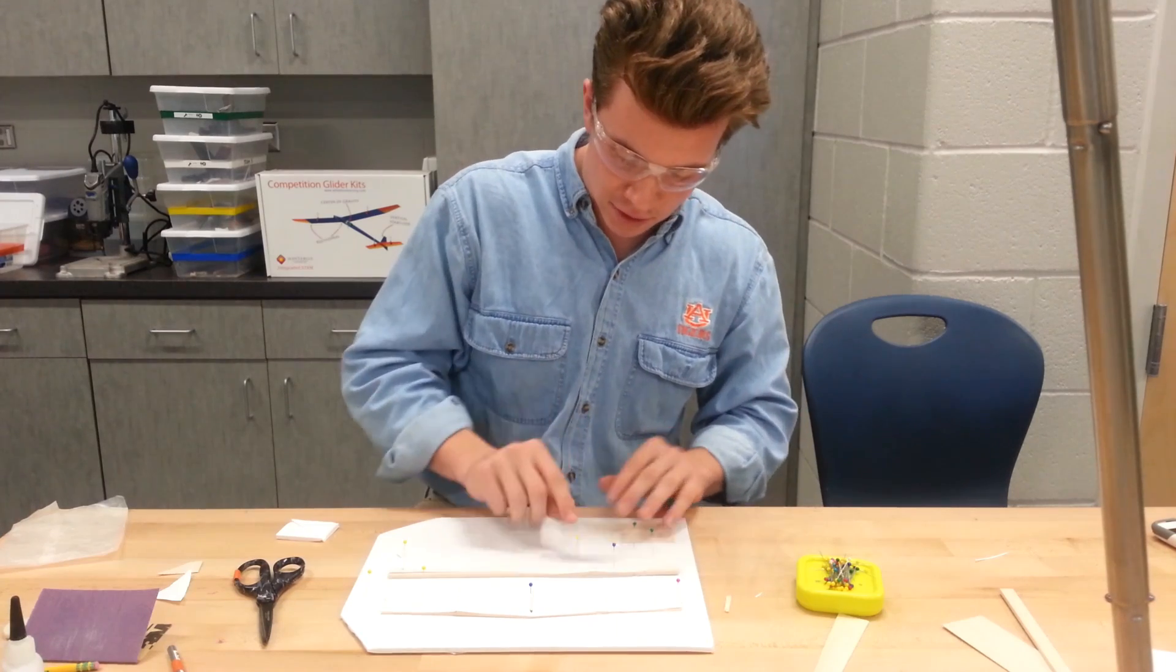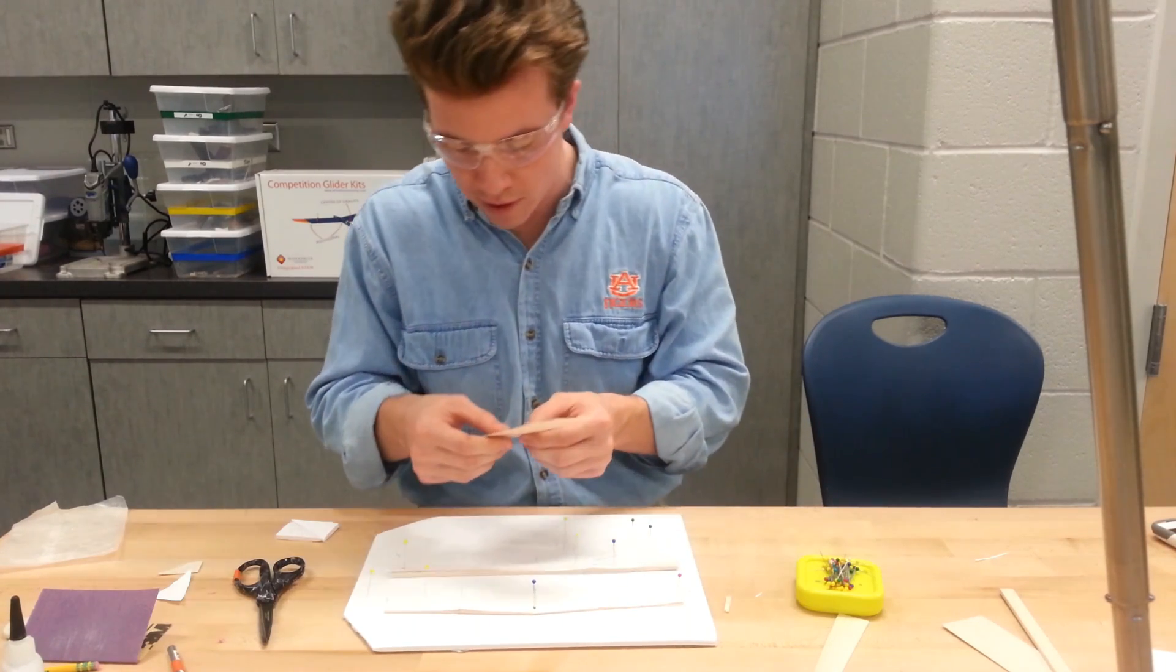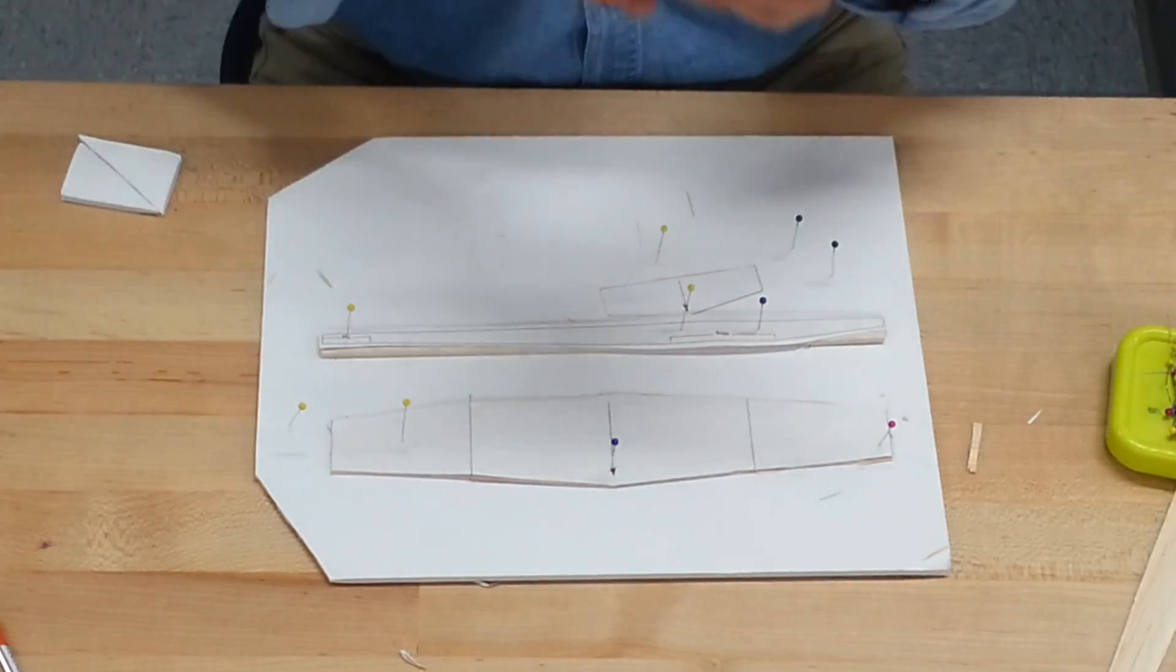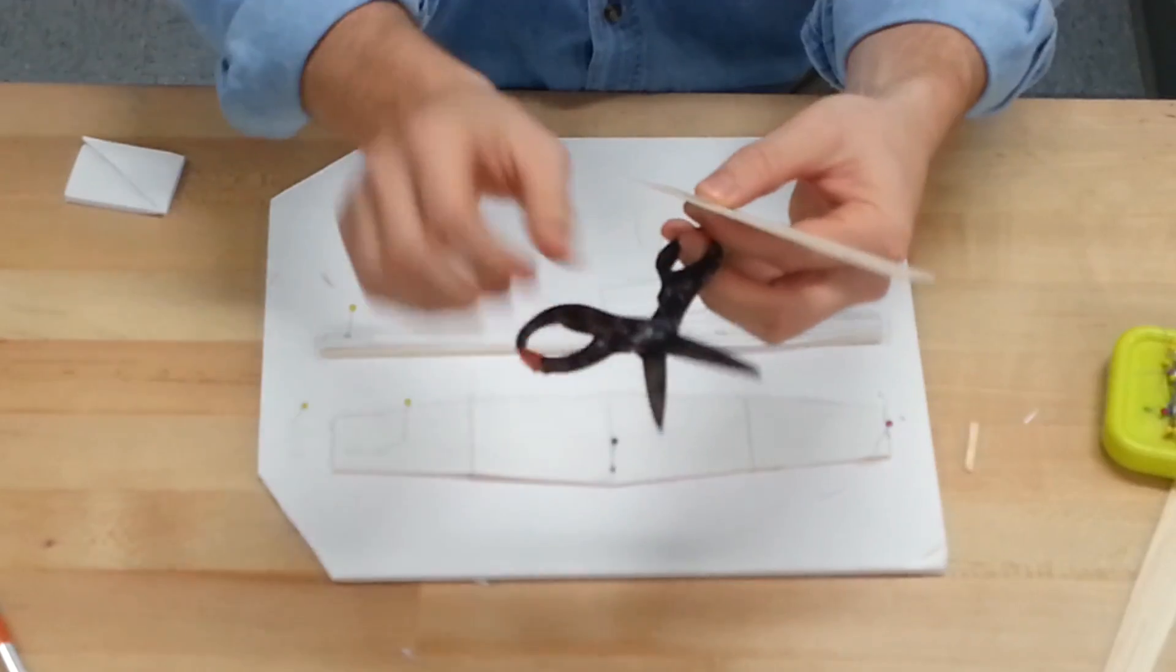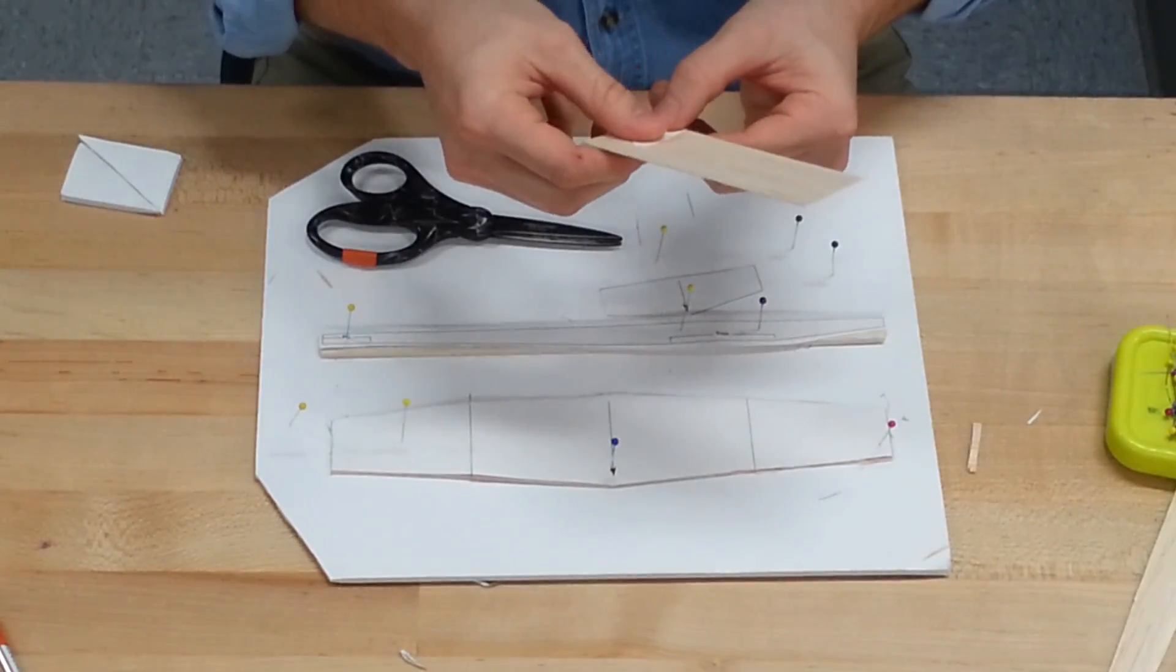The tricky thing about scissors is that this wood is very fragile, so we need to make sure we're cutting with the base of our scissors and not the tips, that way we don't run a risk of splintering the wood.